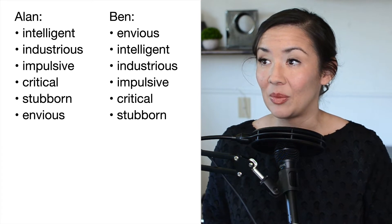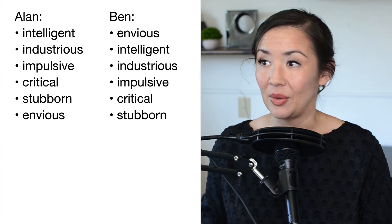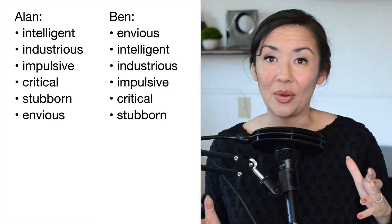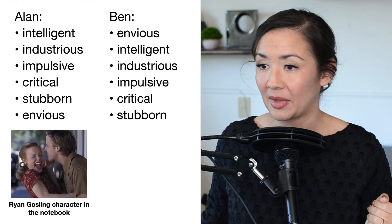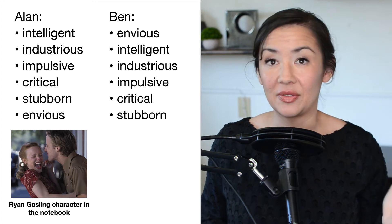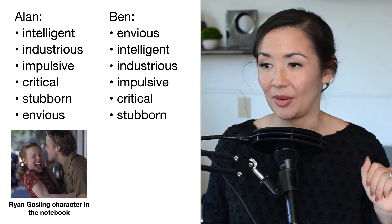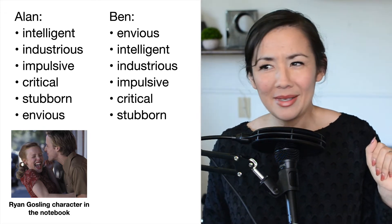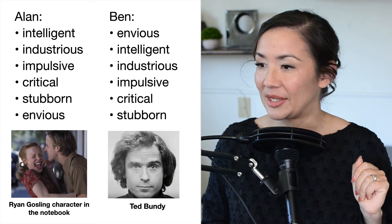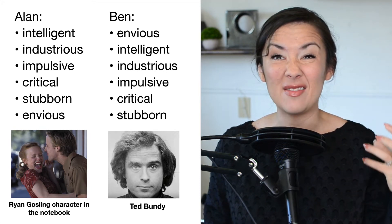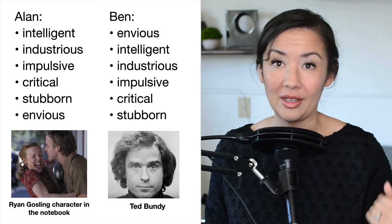Now Ben, on the other hand — we first told you that he was envious. And so all of your interpretations of the following qualities are going to be in a negative tone because you first believe that he's envious. This might lead to entirely different perceptions of who these people are. You might think of Alan as someone like Ryan Gosling's character from The Notebook — spontaneous and intelligent, maybe stubborn and envious, but overall a good character. Whereas Ben, you might think of him as a Ted Bundy-like character where he's envious and that's driving all of these other negative qualities.